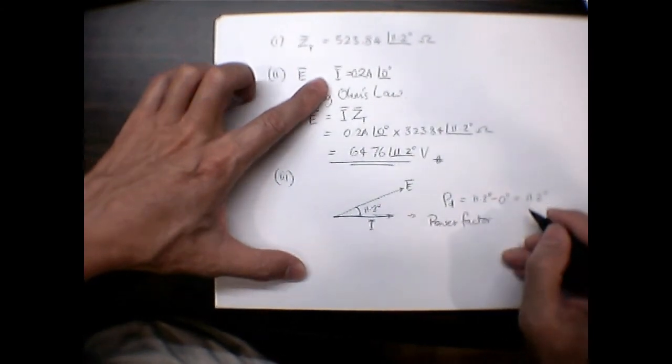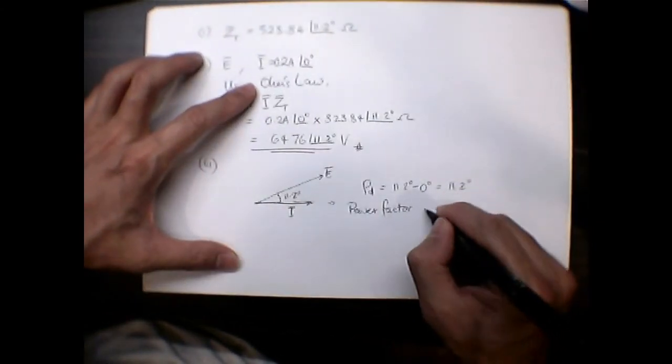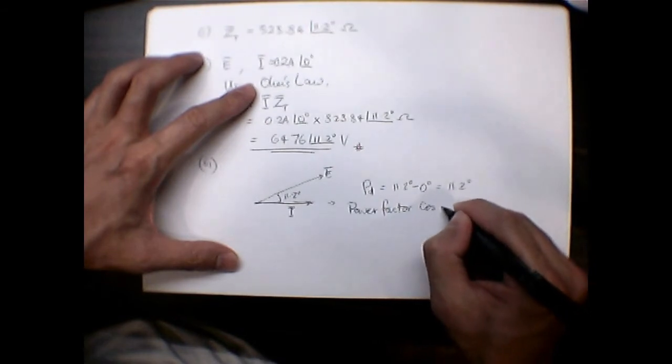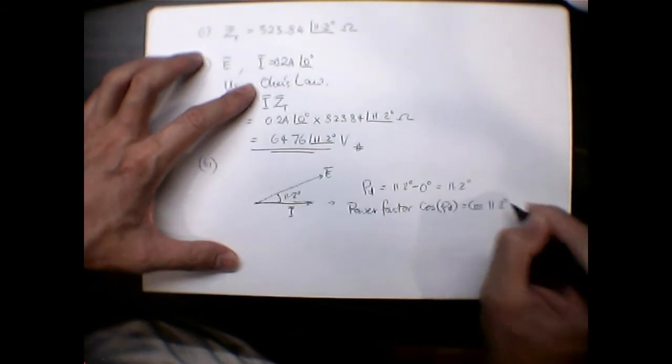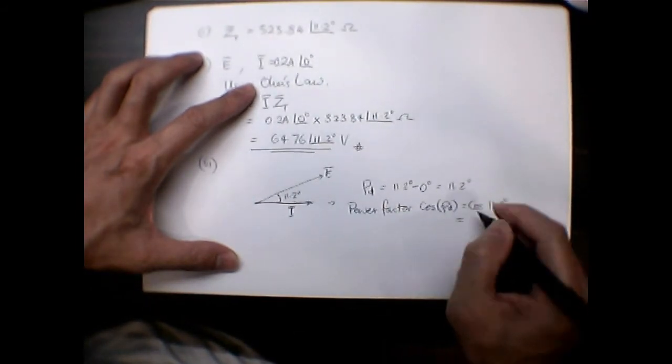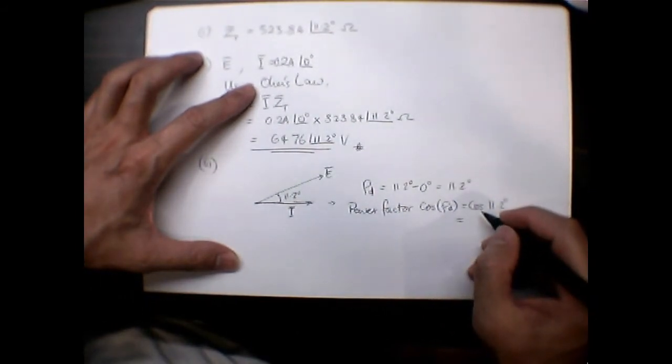So therefore the power factor is given as the cosine of this difference in angle, which is cosine 11.2 degrees, and that gives me 0.9.